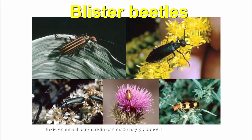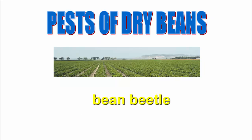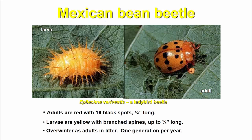And next are blister beetles — we will look at those next time. Now, pests of dry beans. Which beetles are found? Bean beetles — first is the Mexican bean beetle.